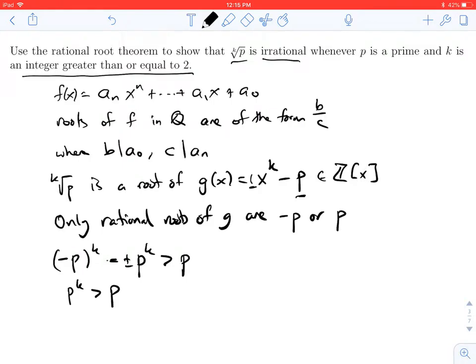So this tells us there are no rational roots to g(x). But we know that the k-th root of p is a root of g. If there are no rational roots, and the k-th root of p is a root, that implies, by the rational root theorem, the k-th root of p cannot be rational.